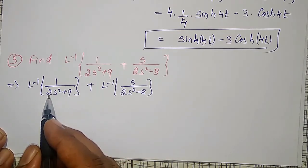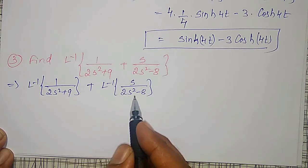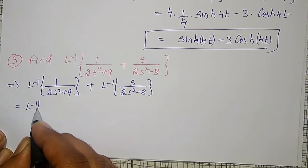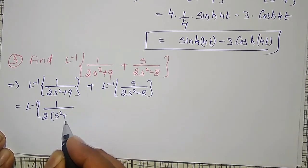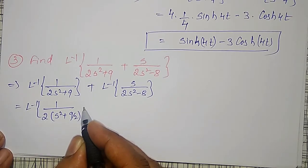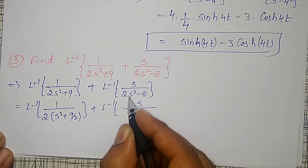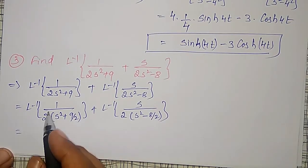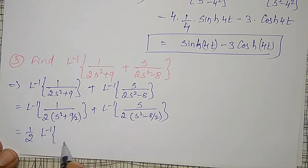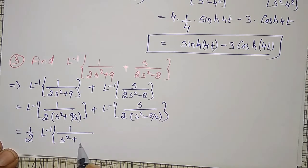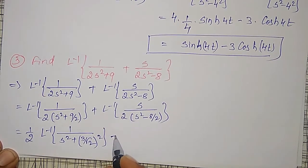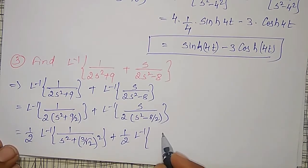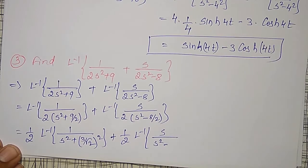From the first term, taking 2 common gives s² + 9/2, which is s² + a² type. From the second term, taking 2 common gives s² - 4, which is s² - a² type. So we have: (1/2) times inverse Laplace transform of 1/(s² + (3/√2)²), plus (1/2) times inverse Laplace transform of s/(s² - 2²).